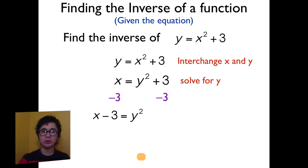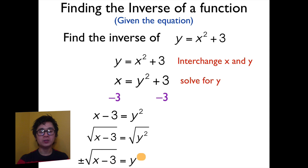And to get rid of the exponent 2 by y, we simply take the square root of both sides of the equation. Therefore, y is equal to plus or minus square root of x minus 3. And that is the value of the inverse of the function y equals x squared plus 3.